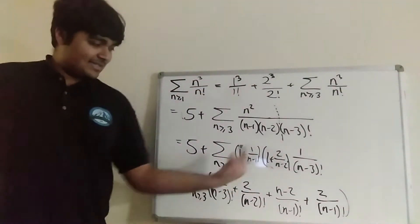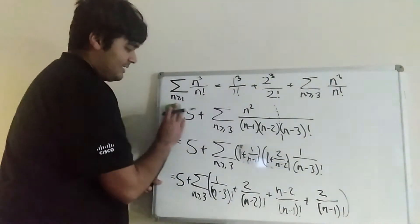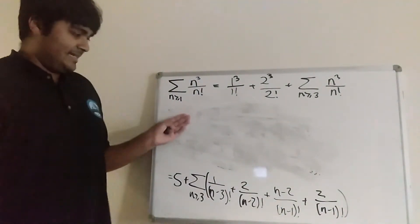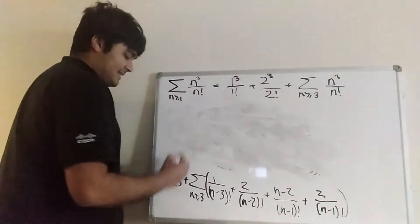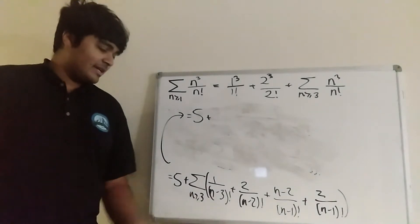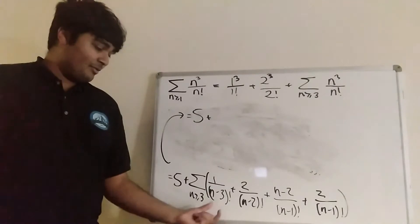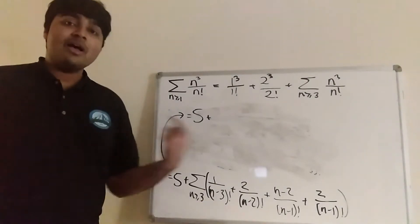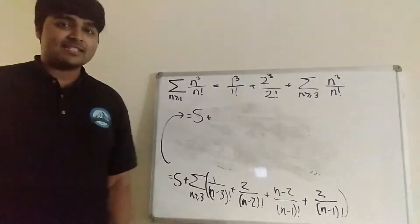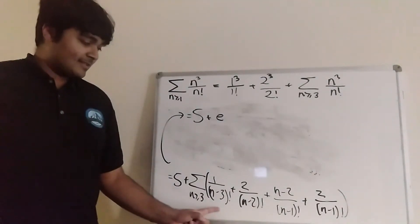Now we can split this as four infinite sums and evaluate a few of them. This is going to be equal to 5 plus, well, the sum from n equals 3 of 1 over n minus 3 factorial. That's just the sum: when n is 3, that's 0 factorial; when n is 4, 1 factorial; and so on. So we get 1 over 0 factorial plus 1 over 1 factorial plus 1 over 2 factorial and so on, which by definition is just equal to e. So that deals with that first term.